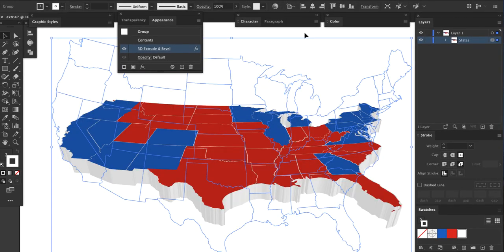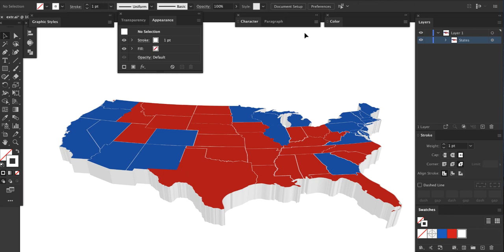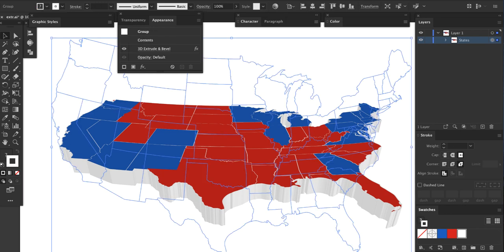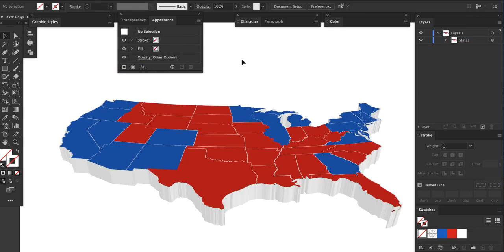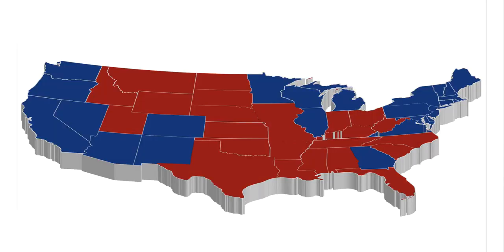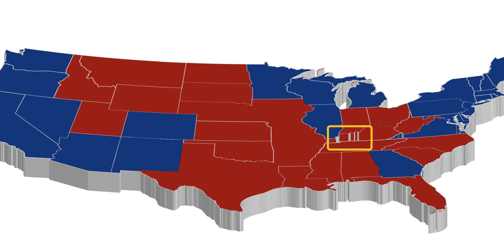And we're done. If this map will be printed, select all and go to Object, Expand Appearance. This converts it into a normal Illustrator image — the 3D effect will no longer be live. A final note: sometimes the extrusion procedure produces strange artifacts. I assume this is caused by a bad join, but it's easy to fix. Once the map has been expanded, you can select the offending pieces and change the color, or you can just touch it up in Photoshop.